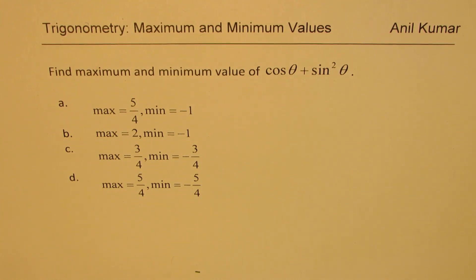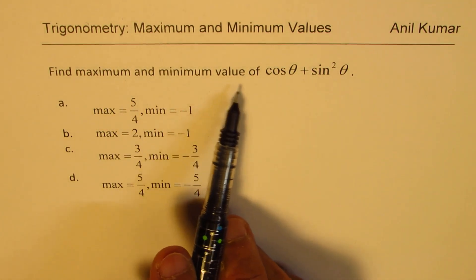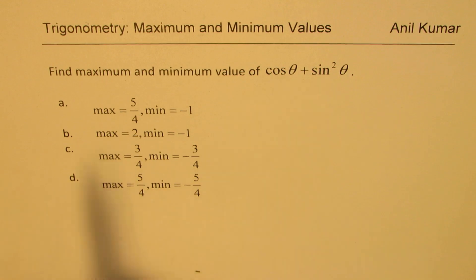The question here is one of the most interesting questions and I expect this to be in this year's test paper. The question is: find maximum and minimum value of cos θ + sin² θ. Four options are given to you. You can pause the video, answer the question, and then look into my suggestions.